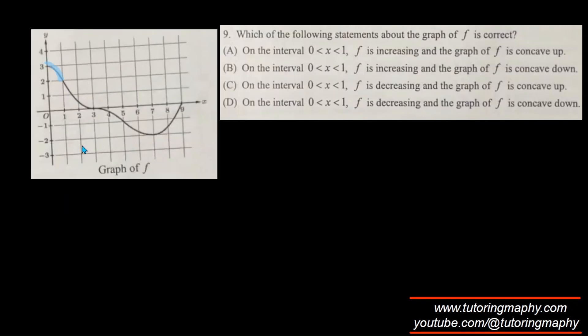The next question analyzes between x = 0 and x = 1. Between zero and one, is the function increasing or decreasing? Clearly the function is decreasing, so the answer is C or D. Is the function concave up or concave down? It's a frowning face, so it's concave down. Therefore the answer is option D.